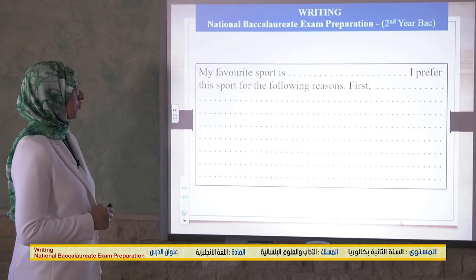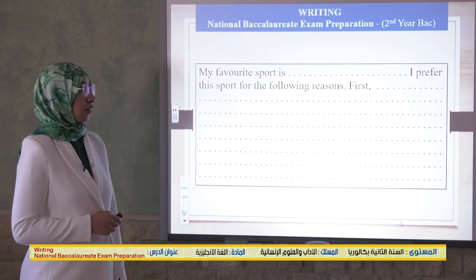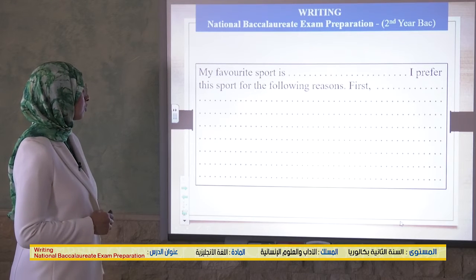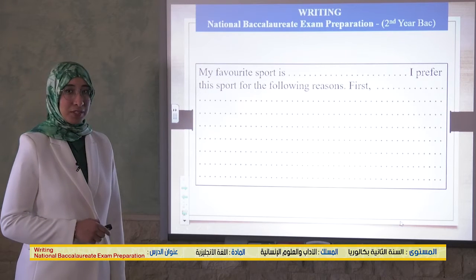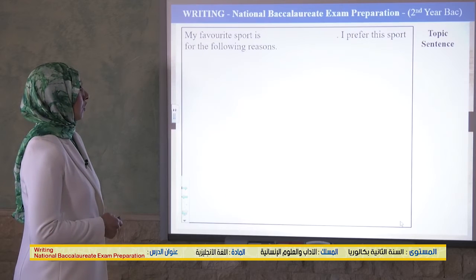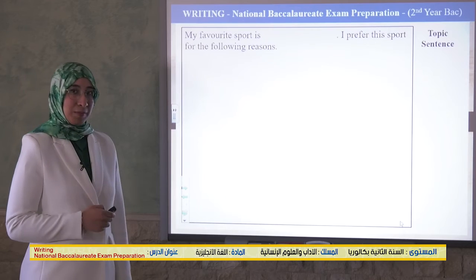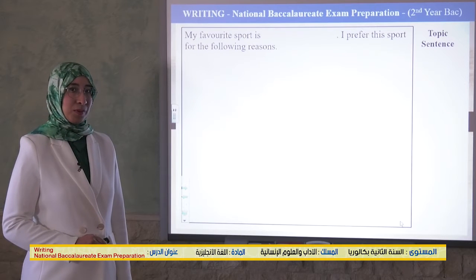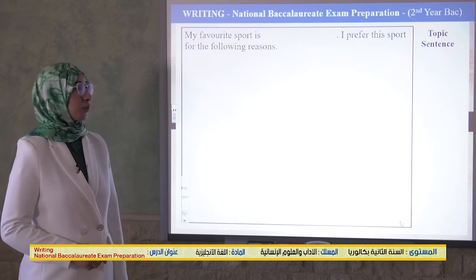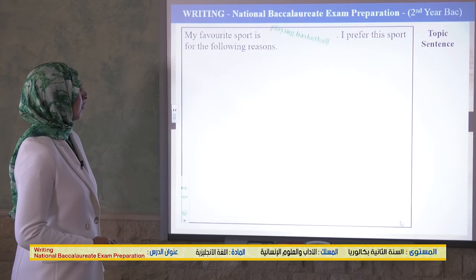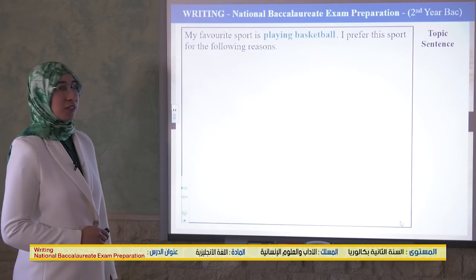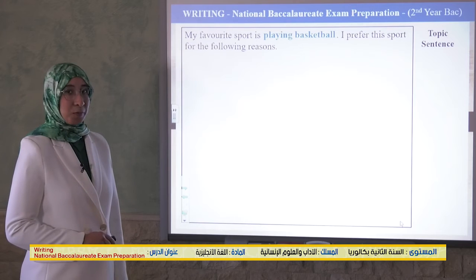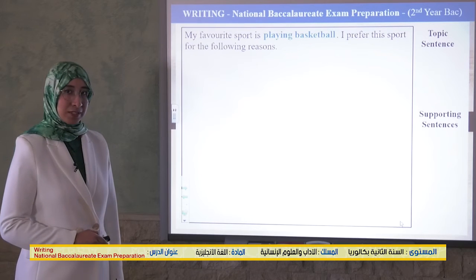The first sentence provided is: 'My favorite sport is ___, I prefer this sport for the following reasons. First...' You just need to fill in the blank with your favorite sport. For example: 'My favorite sport is playing basketball. I prefer this sport for the following reasons.' This is the topic sentence and we need supporting sentences.